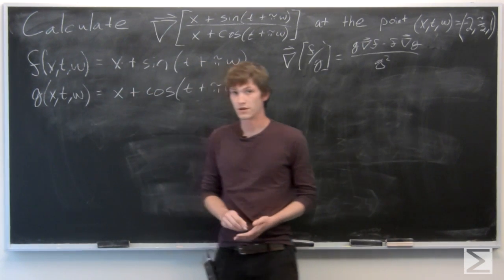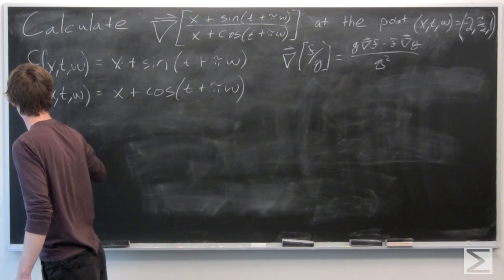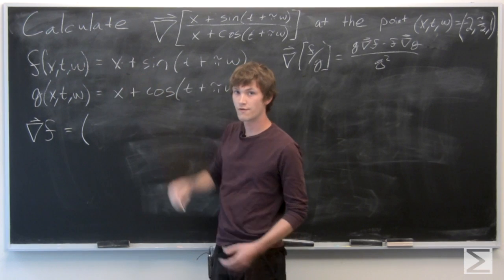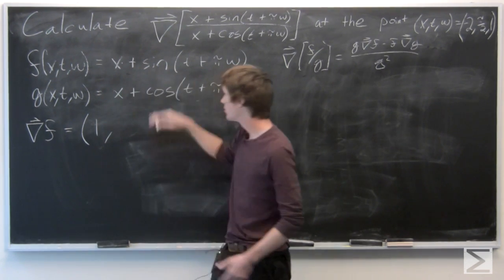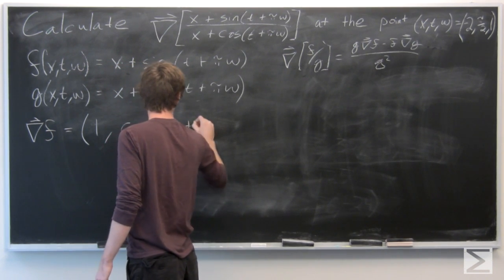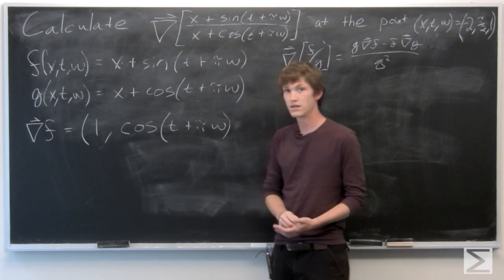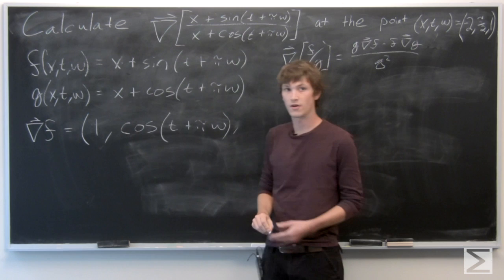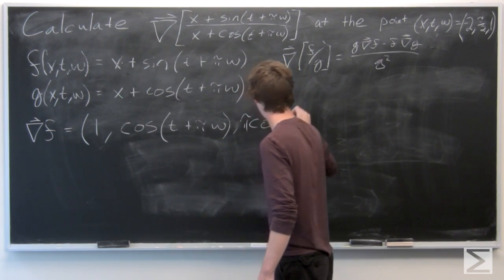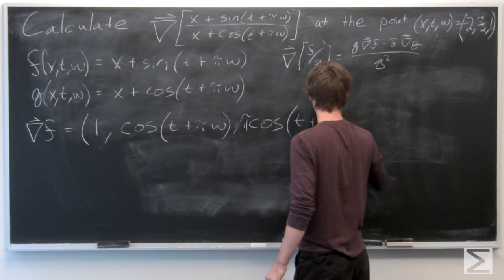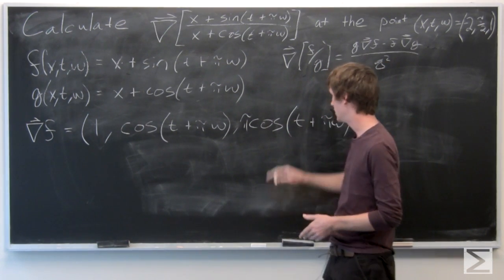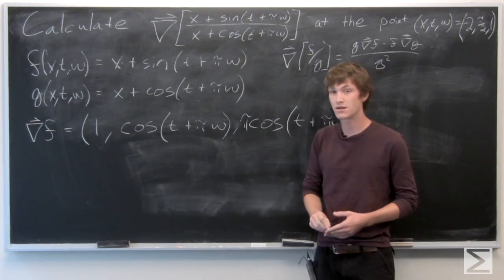To find the gradient vector of f, the partial derivative of f with respect to x is 1. The partial derivative of f with respect to t is cosine(t + πω). And the partial derivative of f with respect to ω is π times cosine(t + πω).